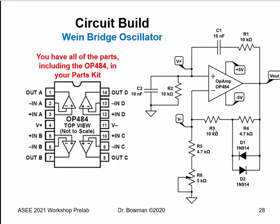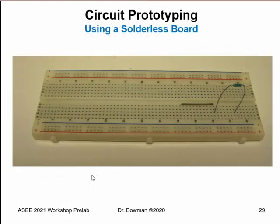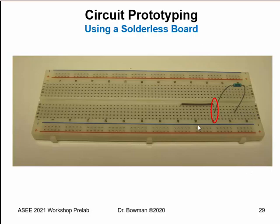We now introduce the circuit build portion of the Wien bridge oscillator. We begin by recognizing the schematic to be built, noting that we have a quad op-amp package — the OP484 — and will use one of those op-amps. You have all the parts needed for this schematic. You'll build the circuit on a solderless breadboard: pins in each row are all connected together, providing convenient bridging points, and the spacing between rows on opposite sides accommodates a dual inline package.